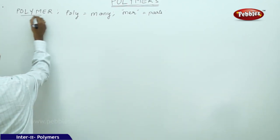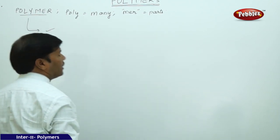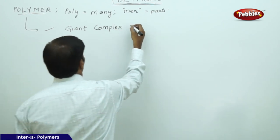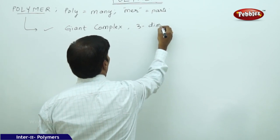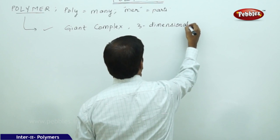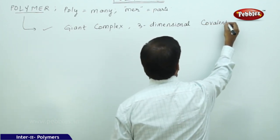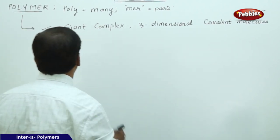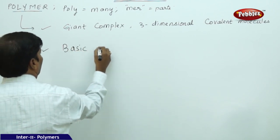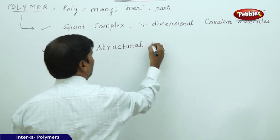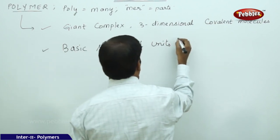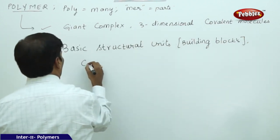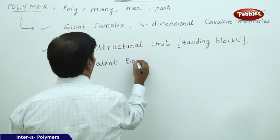What are the characteristic features of polymers? These polymers are actually made up of giant complex three-dimensional covalent molecules. Every polymer is made up of basic structural units, also called building blocks, which are made of covalent bonds.